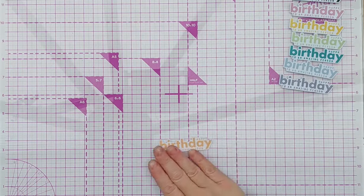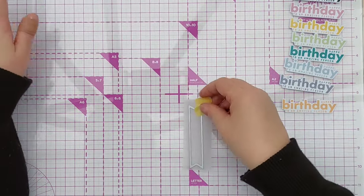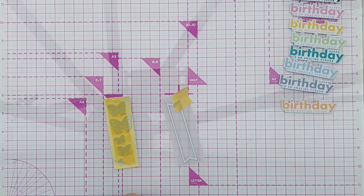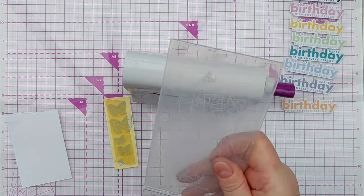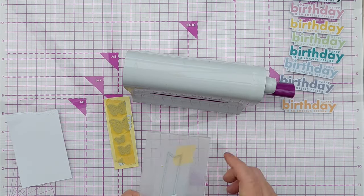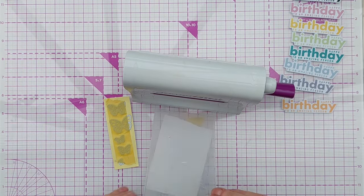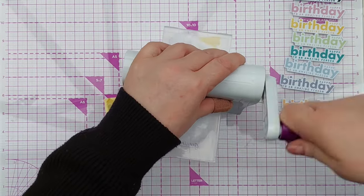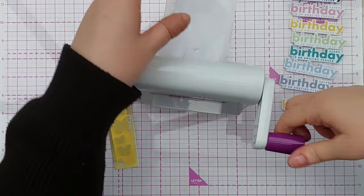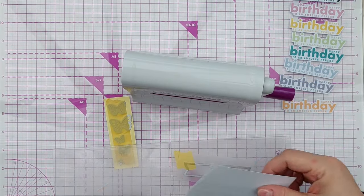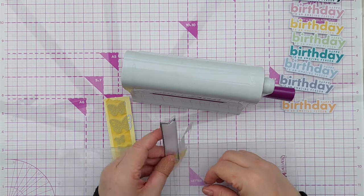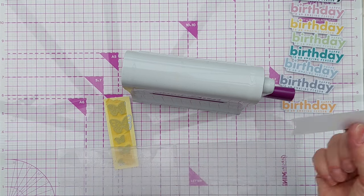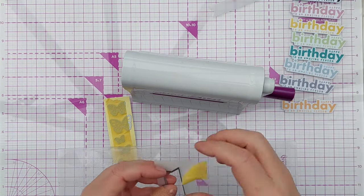So while I have got my die cut machine out I'm going to die cut some other bits. I want a vellum banner for the black birthday sentiment to stick on and I'm going to add a little shim because sometimes this particular die doesn't cut through vellum first time. So if you find your dies aren't cutting first time just add a little bit of scrap paper, scrap cardboard and that will increase the pressure a little bit and you will get a perfect die cut.